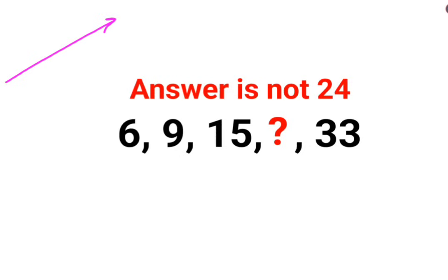Let's look at it this way - all of these are multiples of 3. All of the numbers are multiples of 3. So here we know 3 into 2 gets you 6, 3 into 3 gets you 9, 3 into 5 gets you 15.